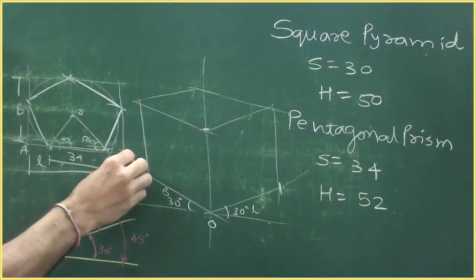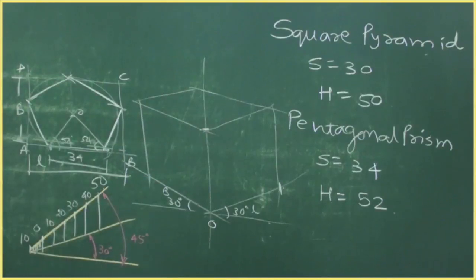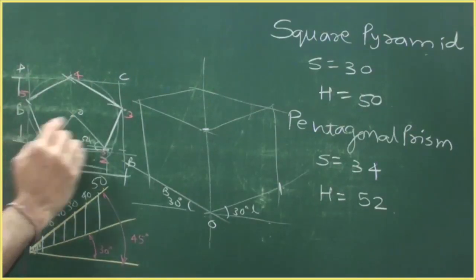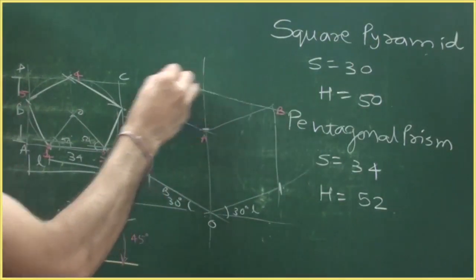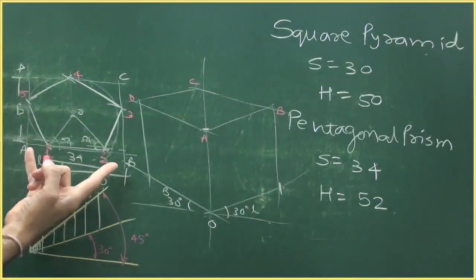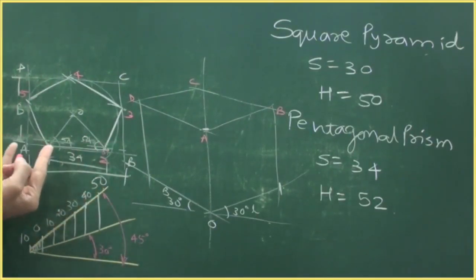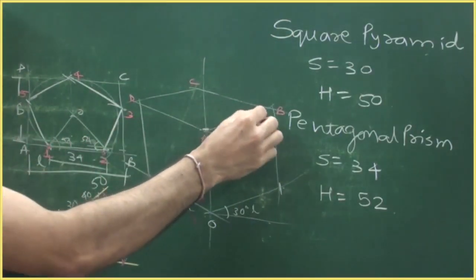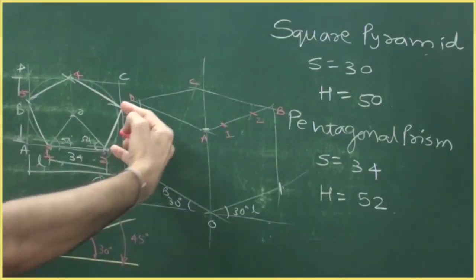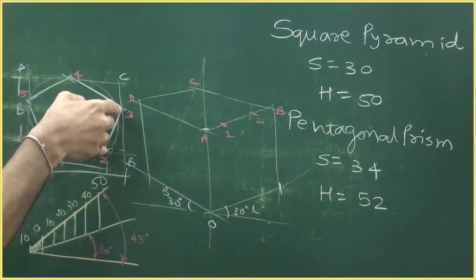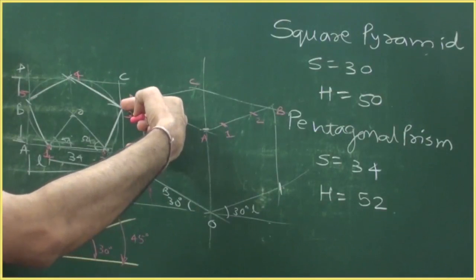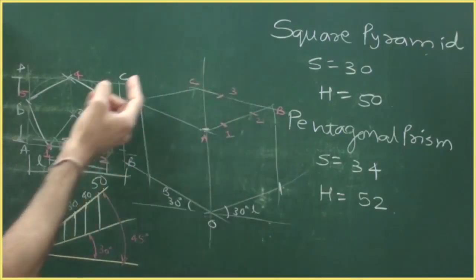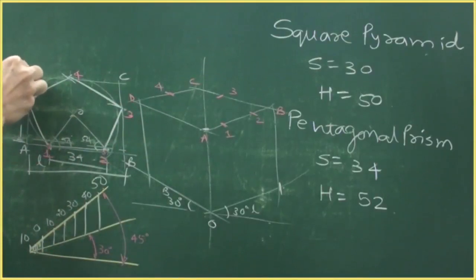To draw the pentagon, name the vertices A, B, C, D, or 1, 2, 3, 4, 5. We need to use the helping figure to find the length and breadth. Take distance A to 1 and cut it over here. Take B to 2 and cut it over here. For point 3, take the vertical distance B to 3. Avoid taking inclined distances — use only horizontal and vertical distances for transferring. Then take C to 4 and D to 5.